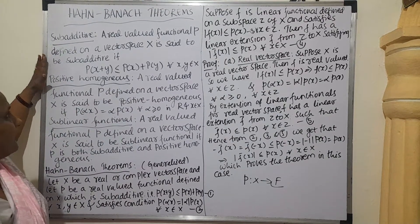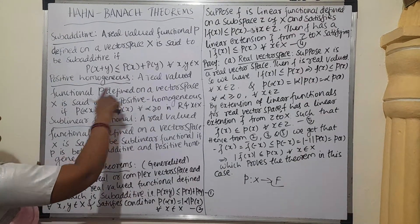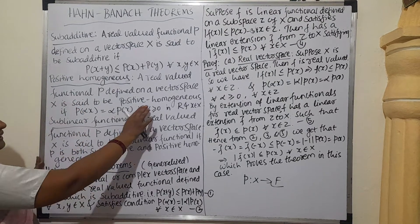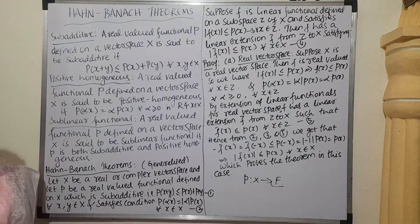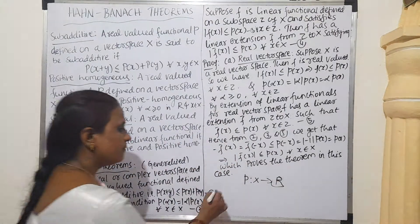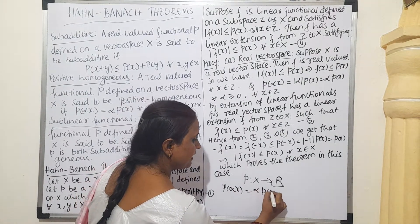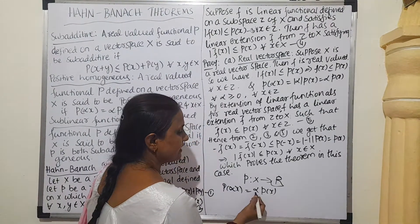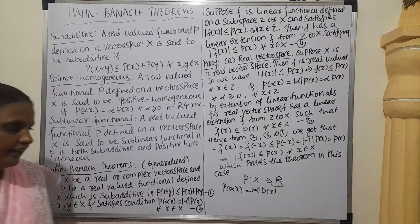On the same functional, we can define positive homogeneous. If we have a real-valued functional P defined on a vector space X, it is said to be positive homogeneous if P(αx) = α·P(x). Here we are saying the field is R, that is why we write P(αx) as α·P(x). If the field is complex, then instead of α we would have |α|. Since it is real, we take α.